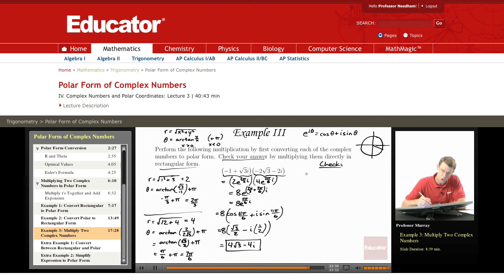Foiling it out, my first terms give me negative 1 times 2 root 3, so that's 2 root 3, positive 2 root 3. My outer terms give me negative 1 minus 2i, so plus 2i. My inner terms give me minus 2 times root 3 times root 3, so that's 6i. Those are my inner terms. I'm doing foil here.